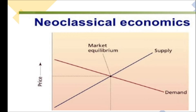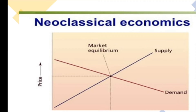Neoclassical economics focuses on how consumers and producers make rational choices to maximize their economic well-being, subject to the constraints of how much income and resources they have available. Neoclassical economists make simplifying assumptions about markets such as perfect knowledge, infinite numbers of buyers and sellers, homogeneous goods, or static variable relationships in order to construct mathematical models of economic behavior, attempting to represent human behavior in functional mathematical language, which allows economists to develop mathematically testable models of individual markets.